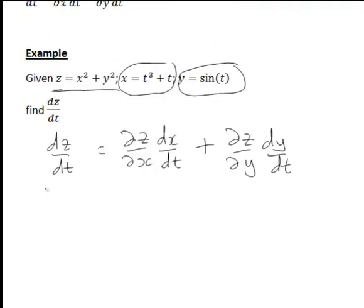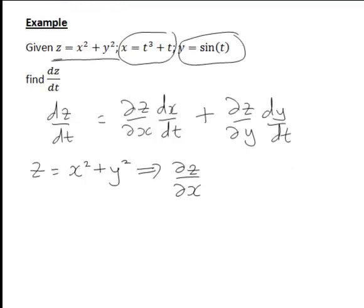First, since we have z = x² + y², we need to partially differentiate z with respect to x to find ∂z/∂x. That's treating y as a constant and differentiating with respect to x, so the x² term becomes 2x, and the y² term becomes 0 since y is treated as a constant. So ∂z/∂x will just be 2x.